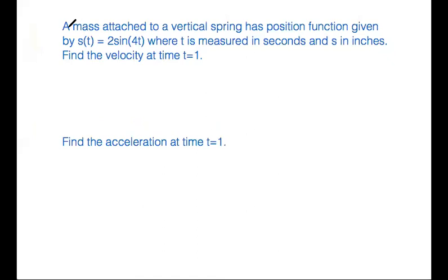Here we have a problem that says a mass attached to a vertical spring has position function given by s(t) = 2sin(4t), where t is measured in seconds and s in inches. Find the velocity at time t = 1.